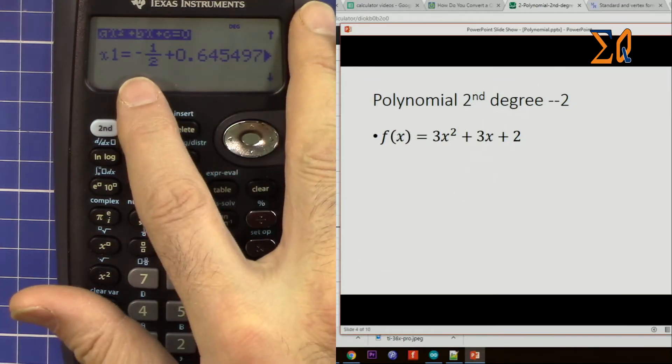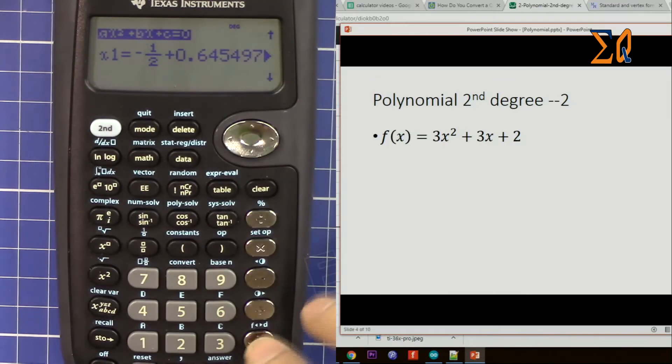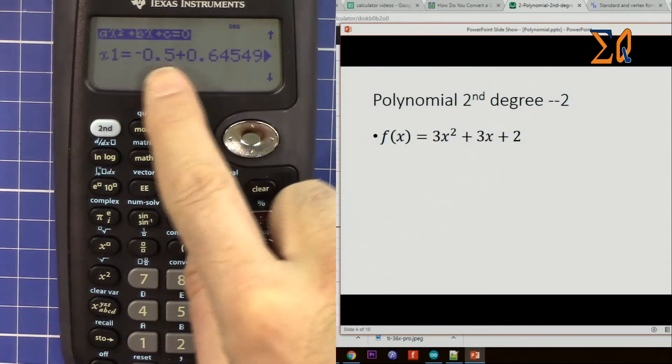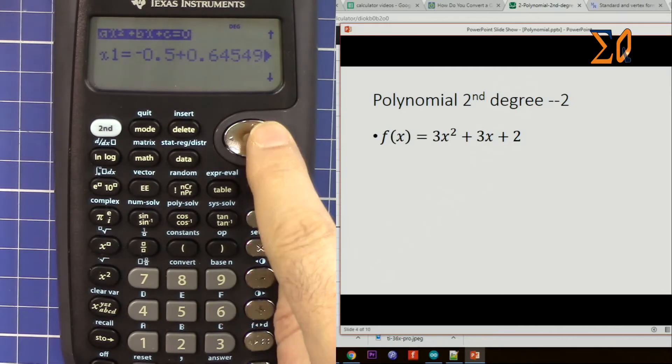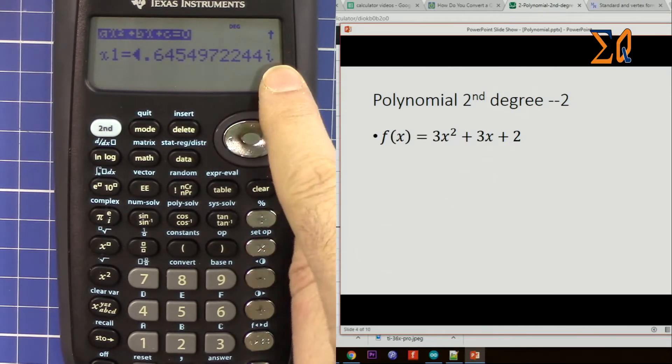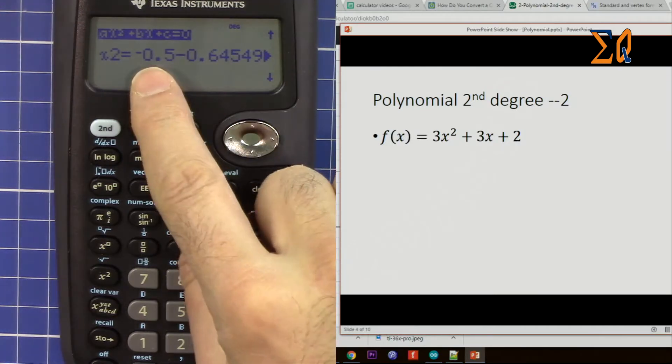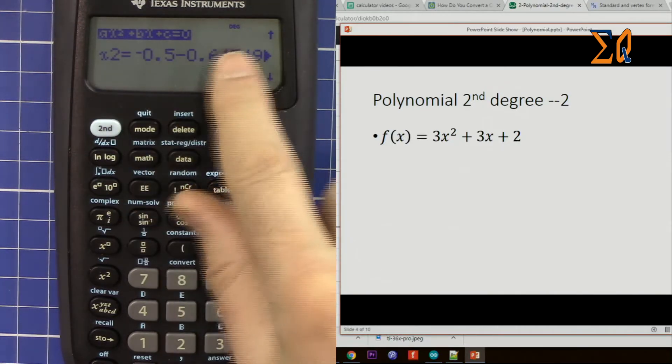Now we have -1/2. If I want to show it as a decimal... So now this is a real part, and plus this is the imaginary part, as you can see here, i at the end. So it has real and imaginary. And x2 also the same thing. The only difference between the solutions is the plus sign. If I scroll down and up, you will see the plus sign.